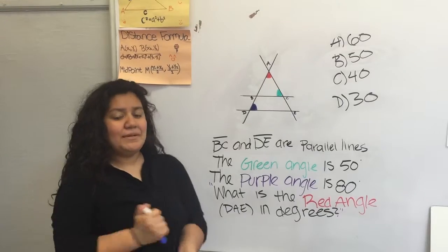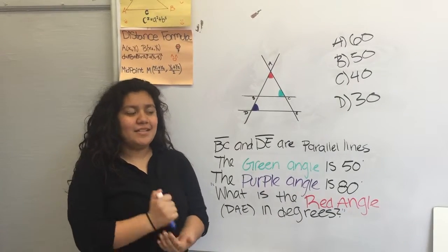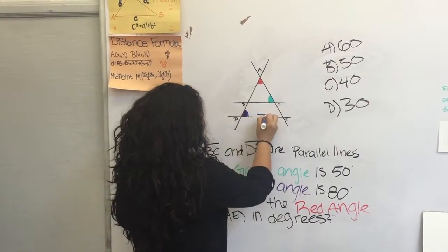BC and DE are parallel lines. Parallel lines are two lines that never intersect. So we'll go ahead and mark that down by using two arrows.